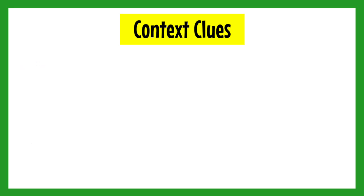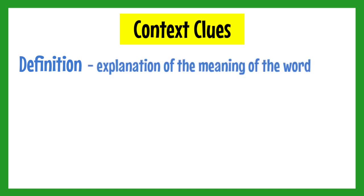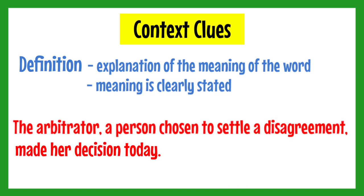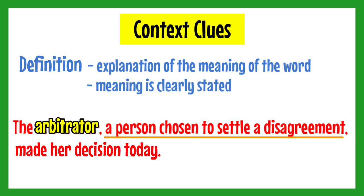Let us now move on to D, which is Definition. As the term suggests, definition gives an explanation of the meaning of the word in the same sentence. You can already find the meaning of the unfamiliar word in the sentence as it is clearly stated or explained. For example: The arbitrator, a person chosen to settle a disagreement, made her decision today. You need to figure out the meaning of the word arbitrator. As you can see, you no longer need to analyze the sentence further because you can find its definition right after it — a person chosen to settle a disagreement.